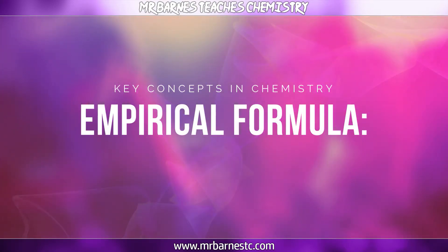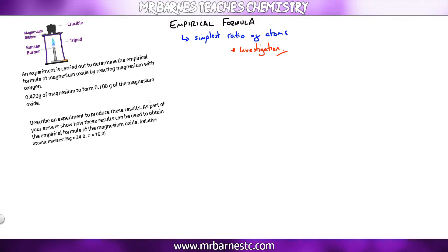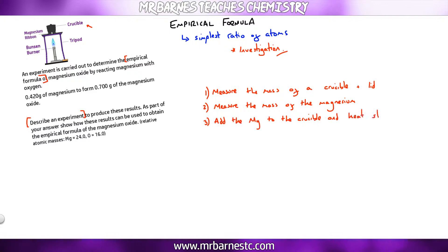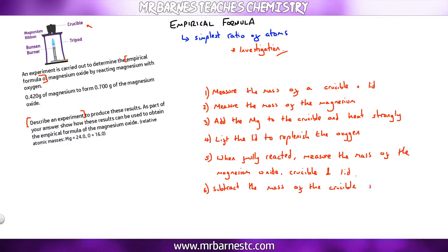The third part of the empirical formula section looks at how you can investigate the empirical formula. For example: an experiment to determine the empirical formula of magnesium oxide. First, measure the mass of your crucible and lid. Then measure the mass of your magnesium and add it to the crucible and heat strongly. During the reaction, lift the lid to replenish the oxygen — otherwise the reaction won't finish. When fully reacted and turned into white powder, re-measure the mass of the magnesium oxide, crucible, and lid, then subtract the mass of the crucible and lid to get the mass of your magnesium oxide.